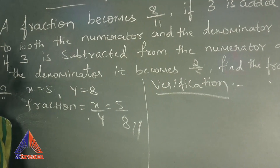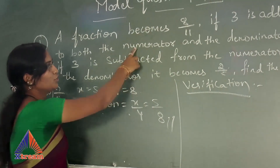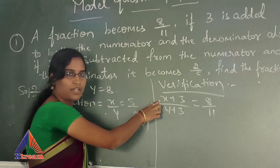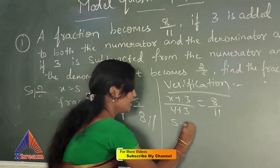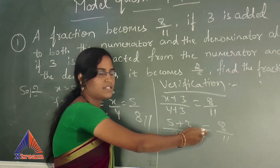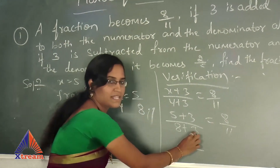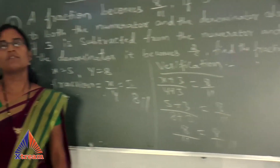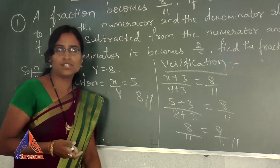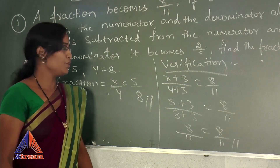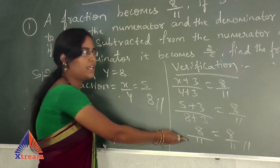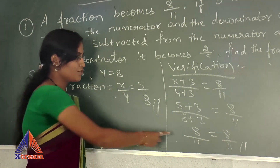This is the verification. From the first condition, X plus 3 divided by Y plus 3 should equal 8 by 11. Substituting X equals 5 and Y equals 8: 5 plus 3 divided by 8 plus 3 gives 8 by 11. LHS equals RHS, so verification is correct. I would like to tell students that in the examination hall, every student should do verification because you may get confused about which is the X value and which is the Y value. If you verify, your answer will be 100% right.